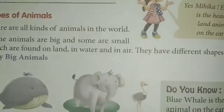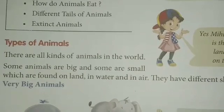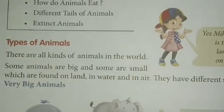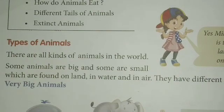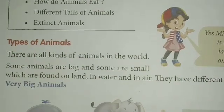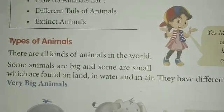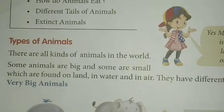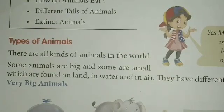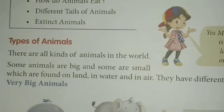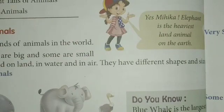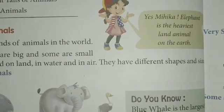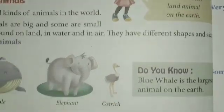और different size रहते हैं। There are all kinds of animals in the world — some are big, some are small — which are found on the land, in water, and in air. They have different shapes and sizes — उनके different shape और size रहते हैं। Okay?